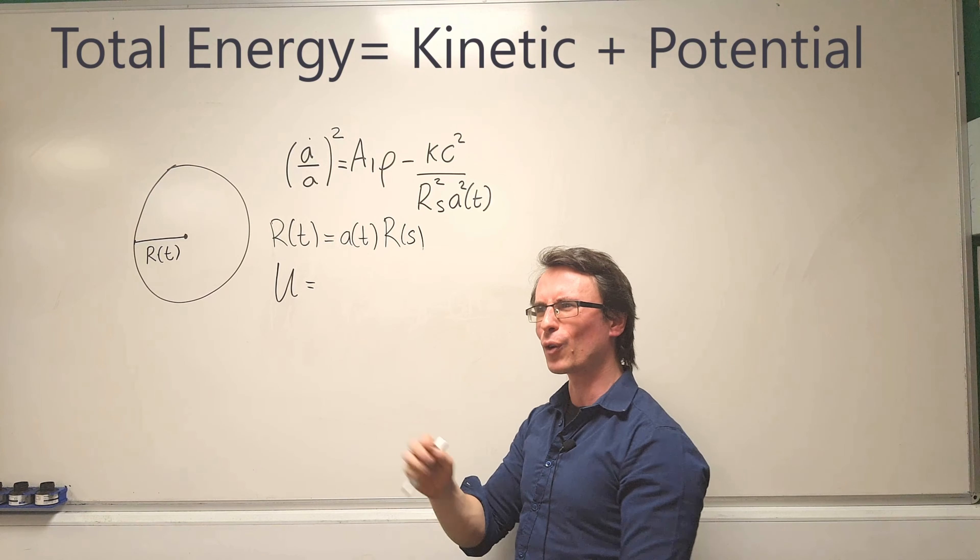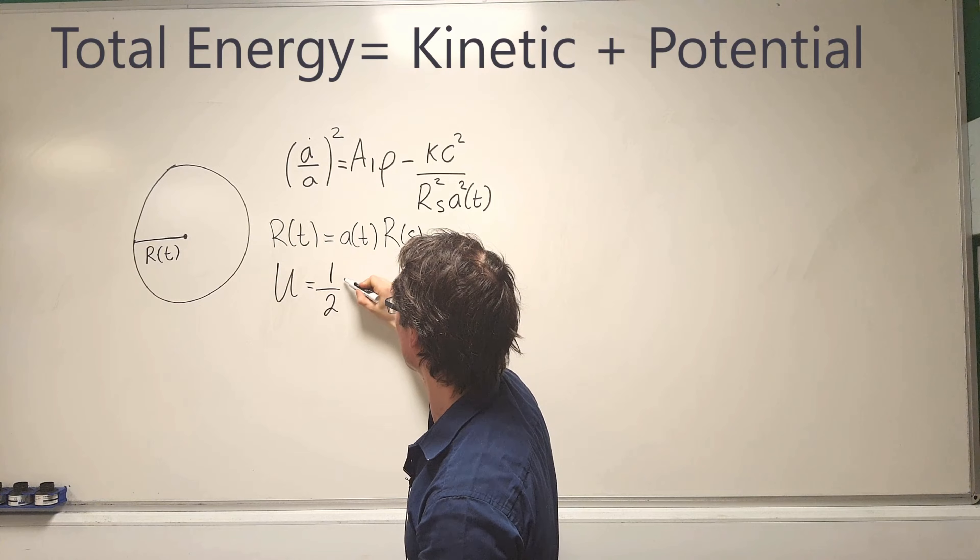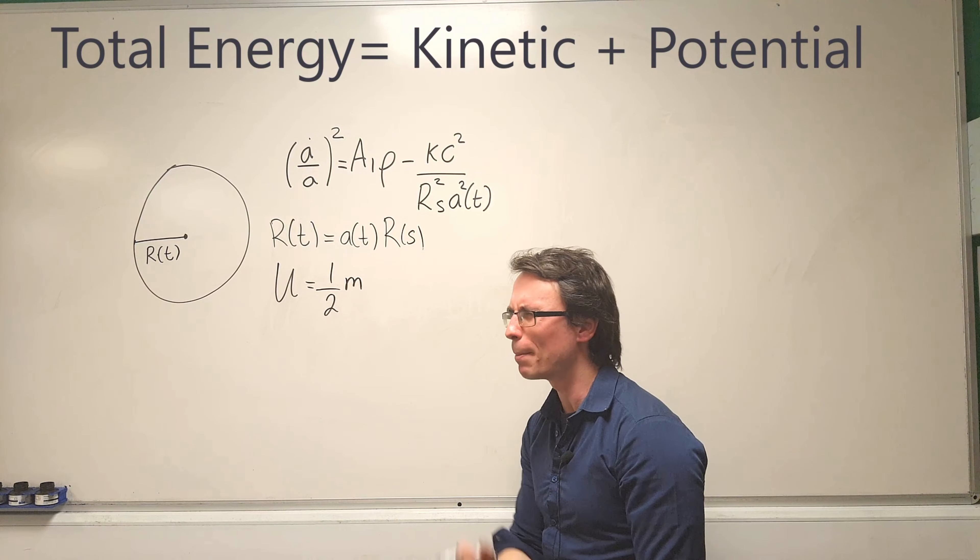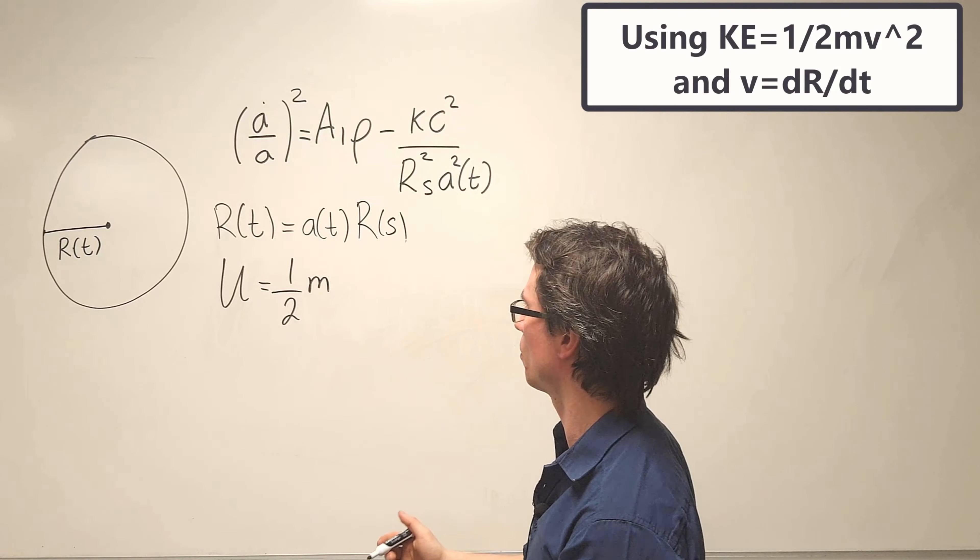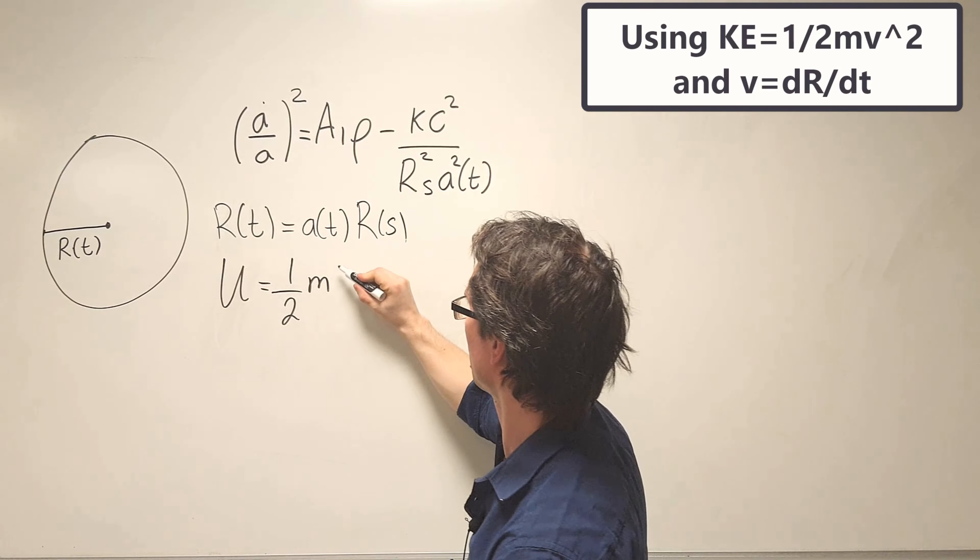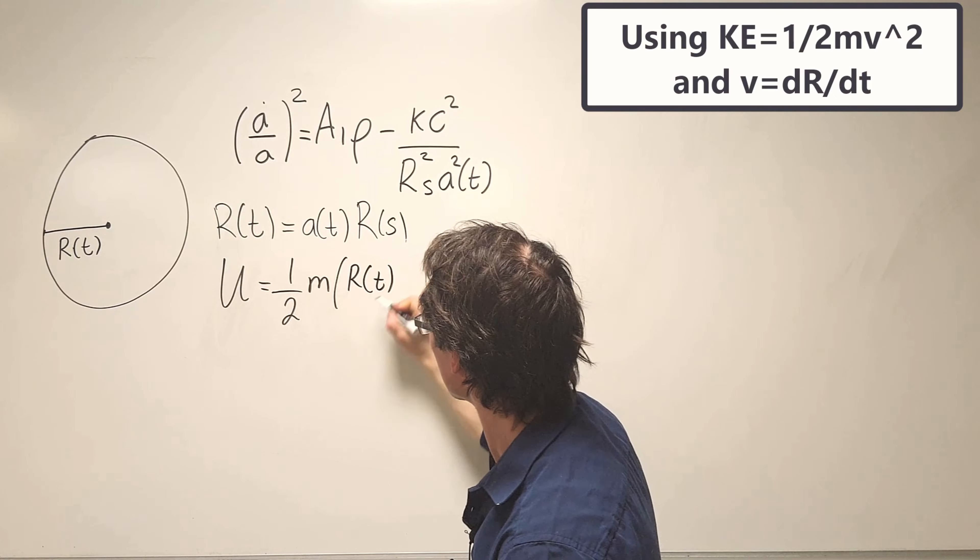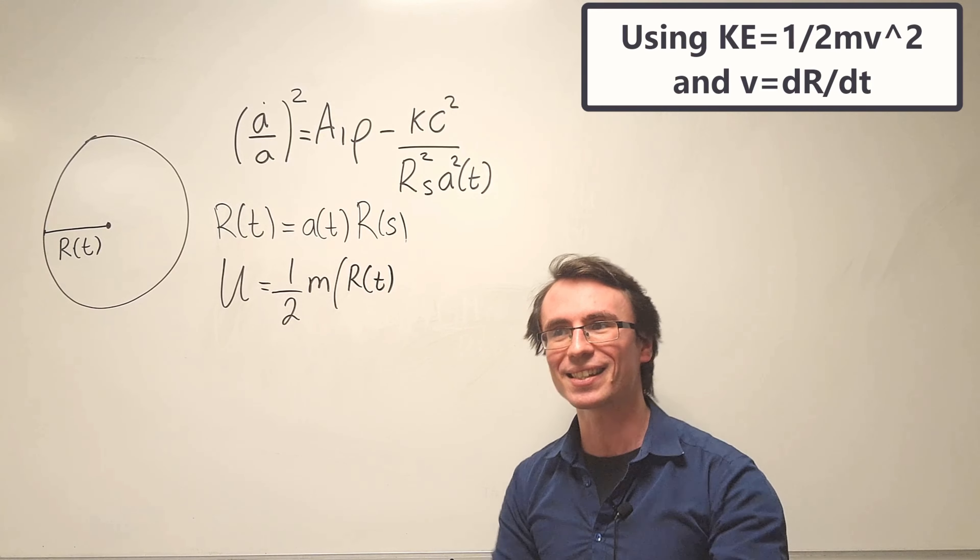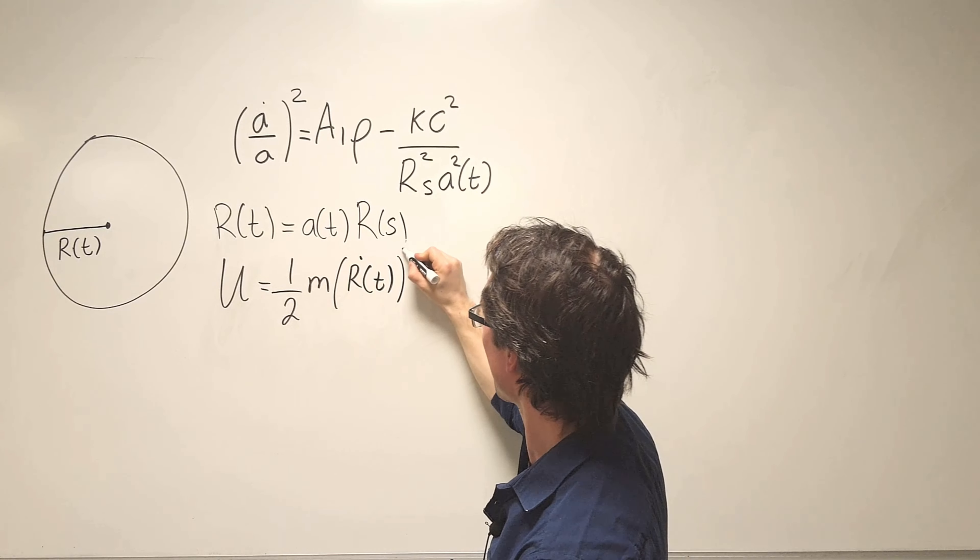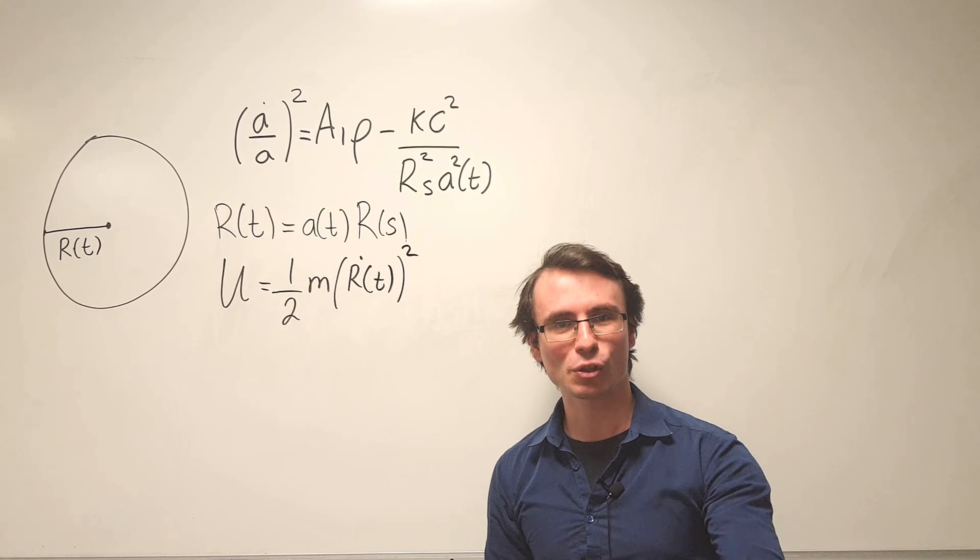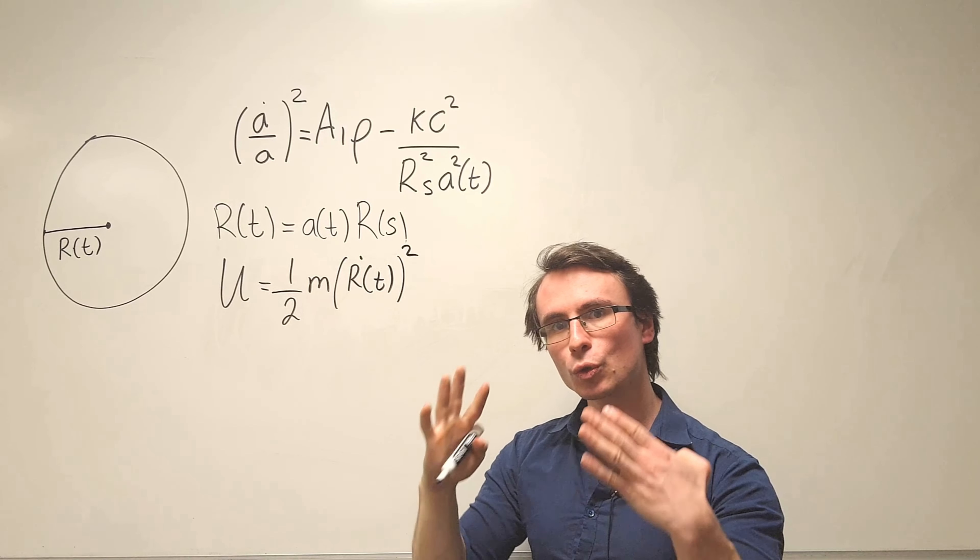Mathematically, we can write that the total energy U will be equal to the kinetic energy which for a test particle of mass M will be a half times the mass times the speed. But speed is just the rate of change of displacement, so this will be equal to the time derivative of the radius R(t), because our radius is now a function of time, and then we square it.